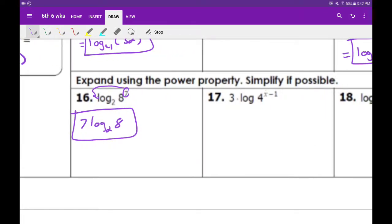This one's a little tricky because we have this whole thing x minus 1. We'll take all that and put it in front, so we have 3 times (x minus 1) times the common log of 4. We can distribute the 3, so we get 3x minus 3 in parentheses because it's still multiplied to the log of 4.